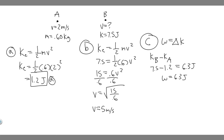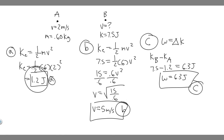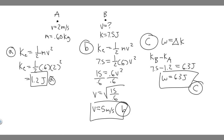So to recap: the total work done is 6.3 joules — that's your answer to C. 5 meters per second was your answer to B. And 1.2 joules was your answer to A. Hopefully you found this useful.